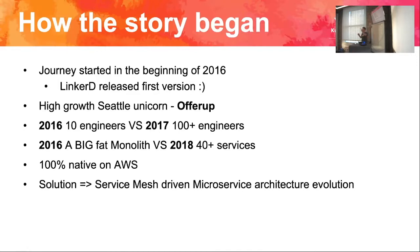This is a classic case where we needed to build an architecture that scales. Comparing before and after: we went from 10 to hundreds of engineers, from a big monolith to 40-plus services by 2018. We are on AWS — no data center, no cross-cloud — which makes things much simpler. The solution is service mesh-driven microservice architecture evolution.